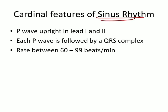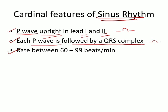You will often hear an ECG described as being in sinus rhythm. An ECG in sinus rhythm should have three cardinal features: the P wave should be upright — a positive deflection — in Lead I and Lead II; each P wave should be followed by a QRS complex; and the rate should be between 60 and 99 beats per minute.